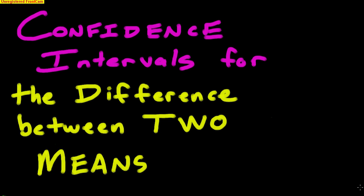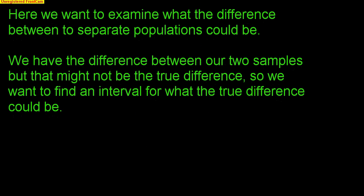This video is going to cover confidence intervals for the difference between two means. We have two totally separate samples and we want to find a confidence interval for the difference between them. We want to examine what the difference between two separate populations could be — like girls vs. boys, Canadians vs. Americans, or Spanish vs. French. We have the difference between our two samples, but it might not be the true difference. The idea is we want to find an interval for what the true difference could be.